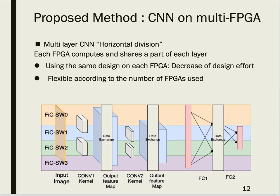The apparent disadvantage of this proposed method is that it requires all-to-all communication — data communication between FPGA boards. This makes it not suitable for traditional multi-FPGA systems with a simple linear network. Here, we tried to apply the method to the FIC system, which has a powerful network to enable efficient broadcasting.